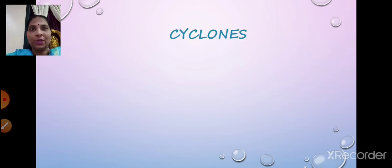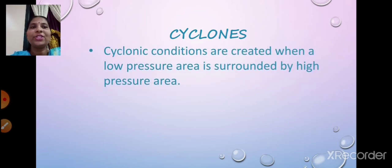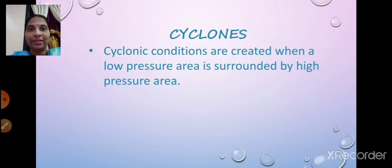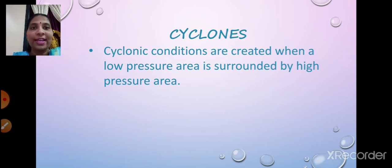You must have heard about cyclones and even seen them on television. So what is a cyclone? What are the conditions or factors responsible for a cyclone to occur? Cyclonic conditions are created when a low pressure area is surrounded by a high pressure area. A low pressure area is where the temperature is high and the pressure is low, and a high pressure area is where the temperature is low and the air pressure is high.